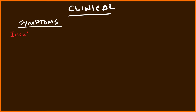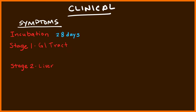Now let's look at the clinical aspects of Hepatitis A virus, particularly its symptoms and presentations. First, Hepatitis A virus has a long incubation period, up to 28 days. Typically, a patient would have some history of traveling to a third world country about a month ago and suddenly developing symptoms. I like to think of the Hepatitis A virus in two stages: stage one, the GI tract stage when the virus is in the GI system, and stage two, the liver stage when the virus particles go into the liver.